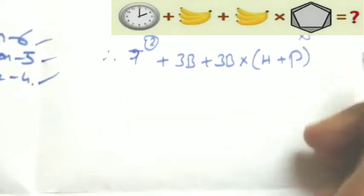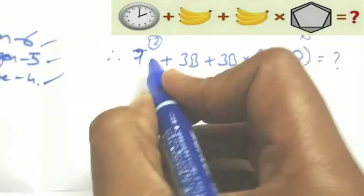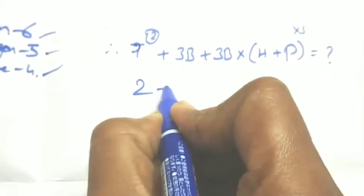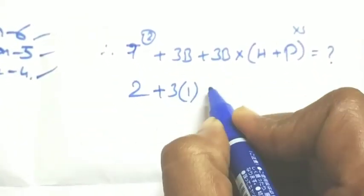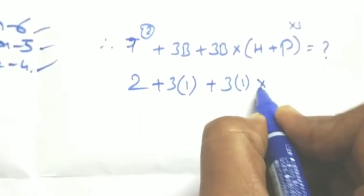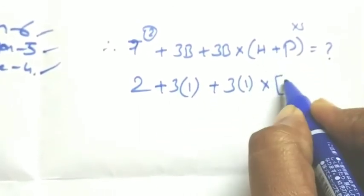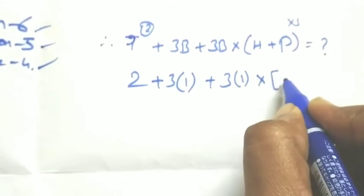This value is how much they are asking: time value is 2, plus 3 (banana is 1), plus 3 (banana is 1), times hexagon is 6 sides and pentagon is 5 sides, so 6 plus 5 equals 11.